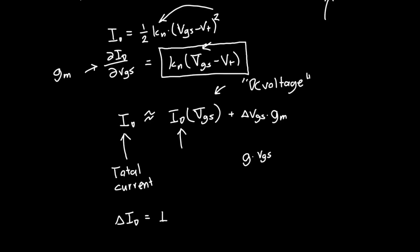And that's just equal to ID as a function of big VGS plus delta VGS minus our drain current at big VGS. And that's just equal to delta VGS times GM. Cool.